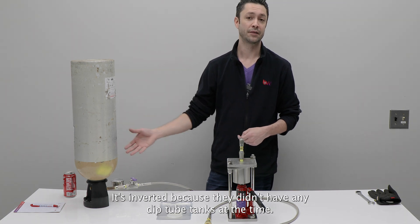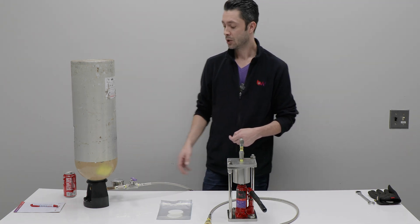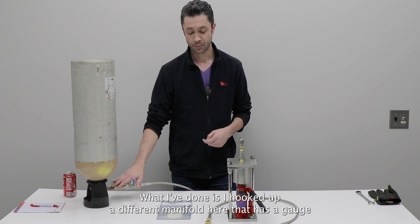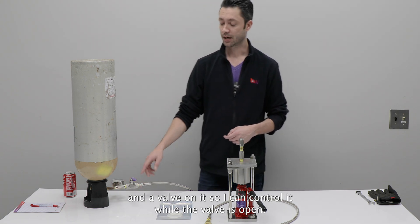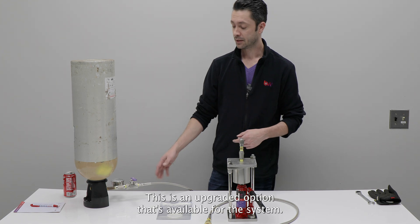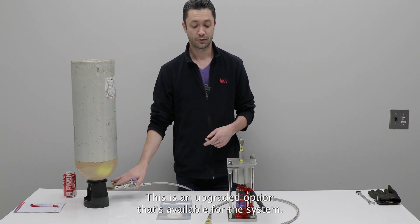It's inverted because they didn't have any dip tube tanks at the time. What I've done is I hooked up a different manifold here that has a gauge and a valve on it so I can control it while the valve is open. This is an upgraded option that's available for the system.